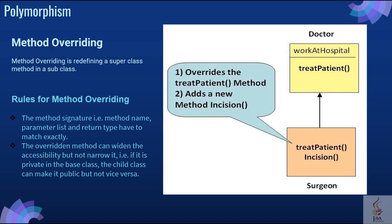Method overriding is redefining a superclass method in a subclass. There are rules for overriding. The method signature — method name, parameter list and return type — have to be matched exactly. The overriding method can widen the accessibility but not narrow it. If it is private in the base class, the child class can make it public, but not vice versa.